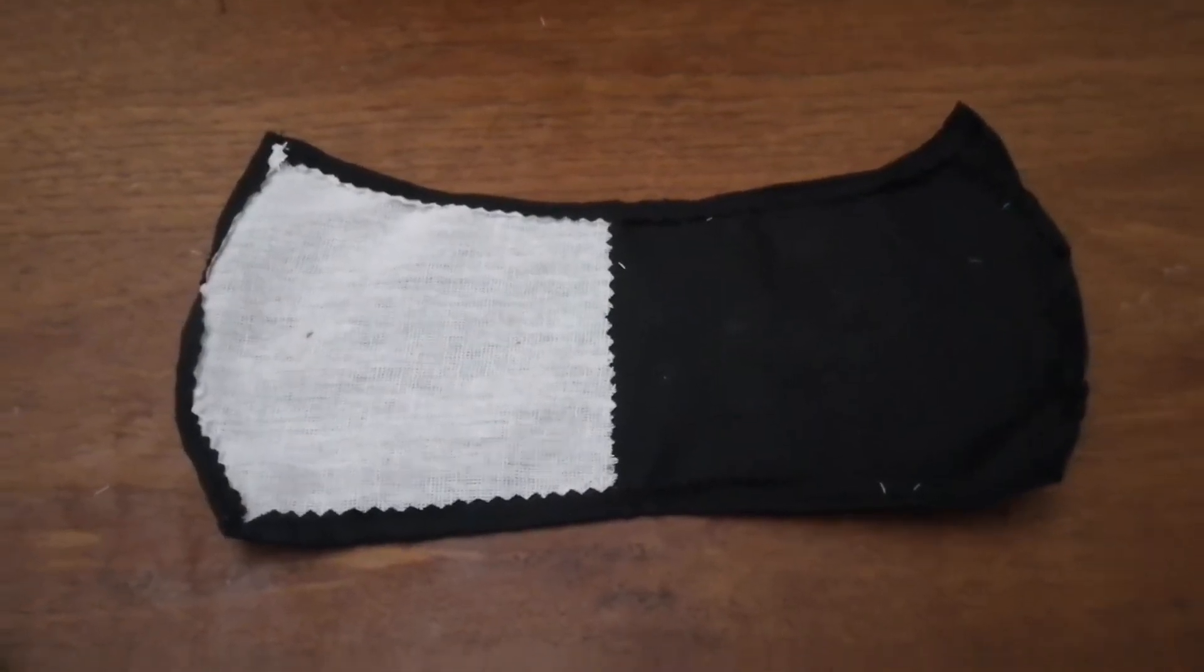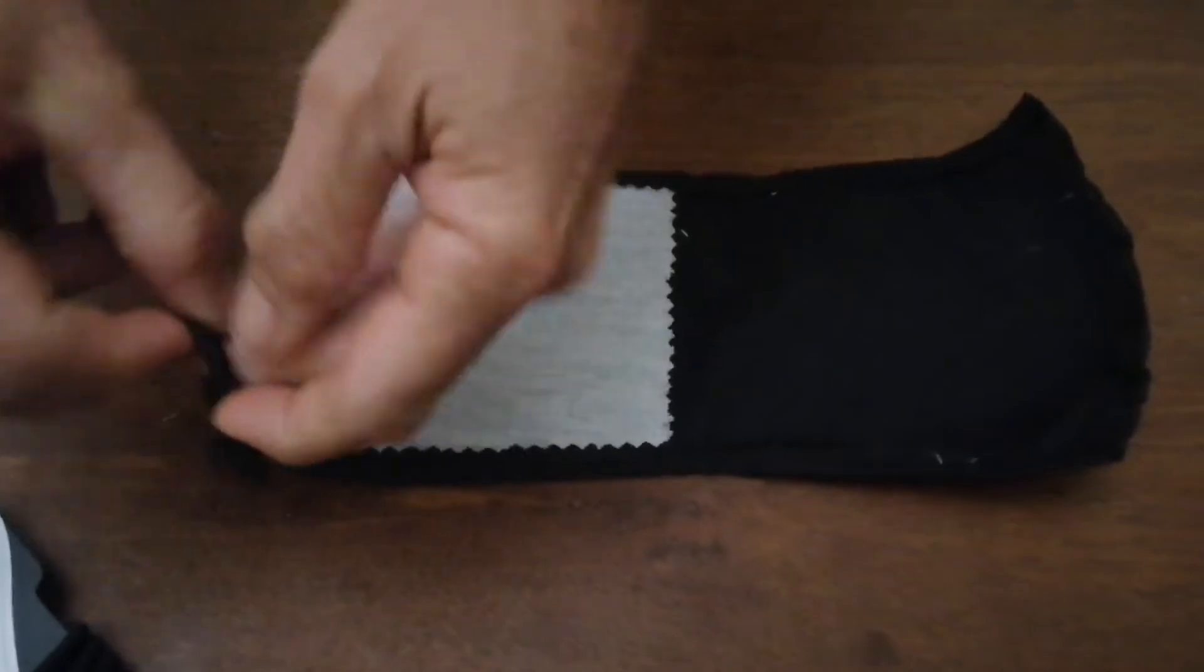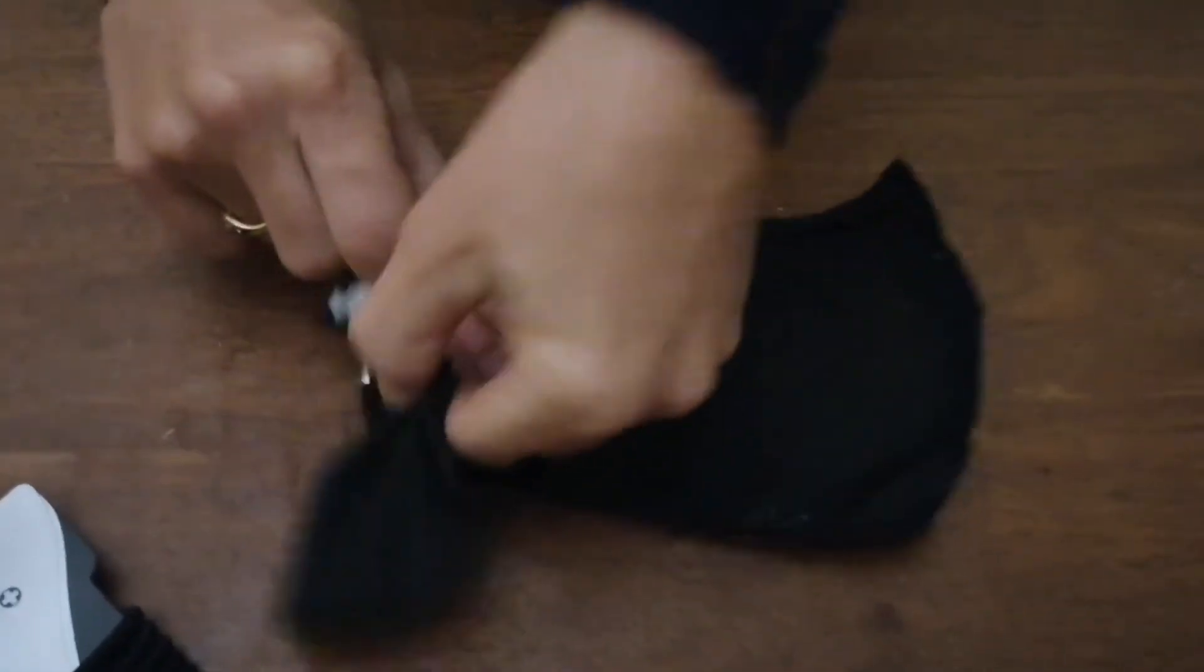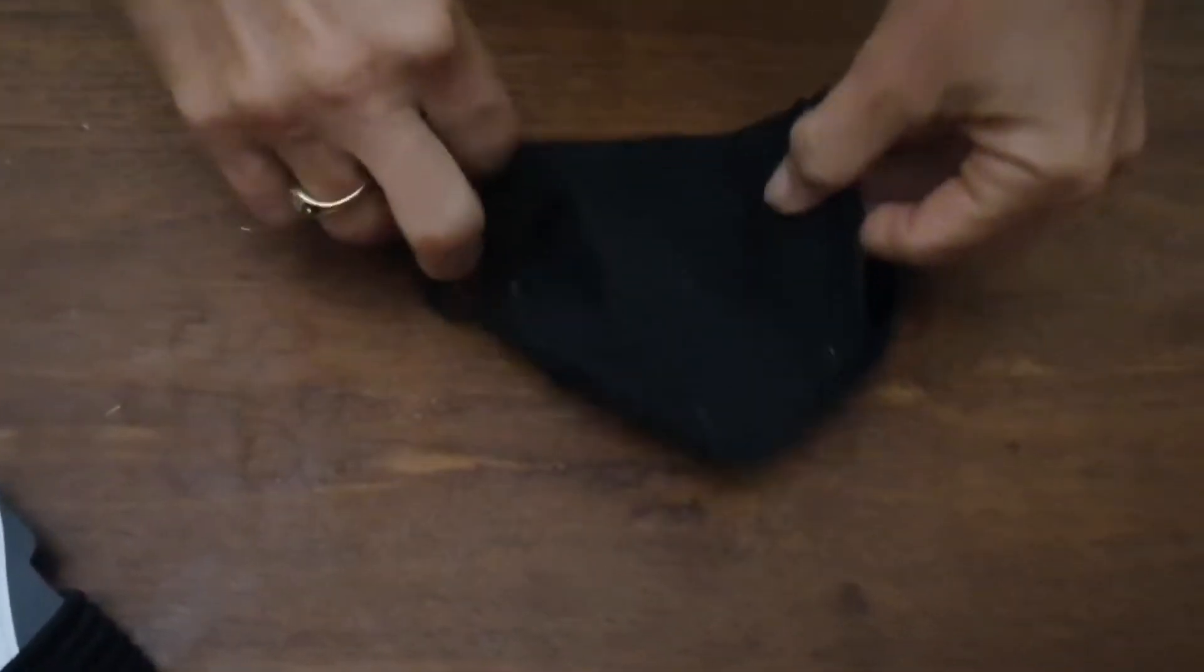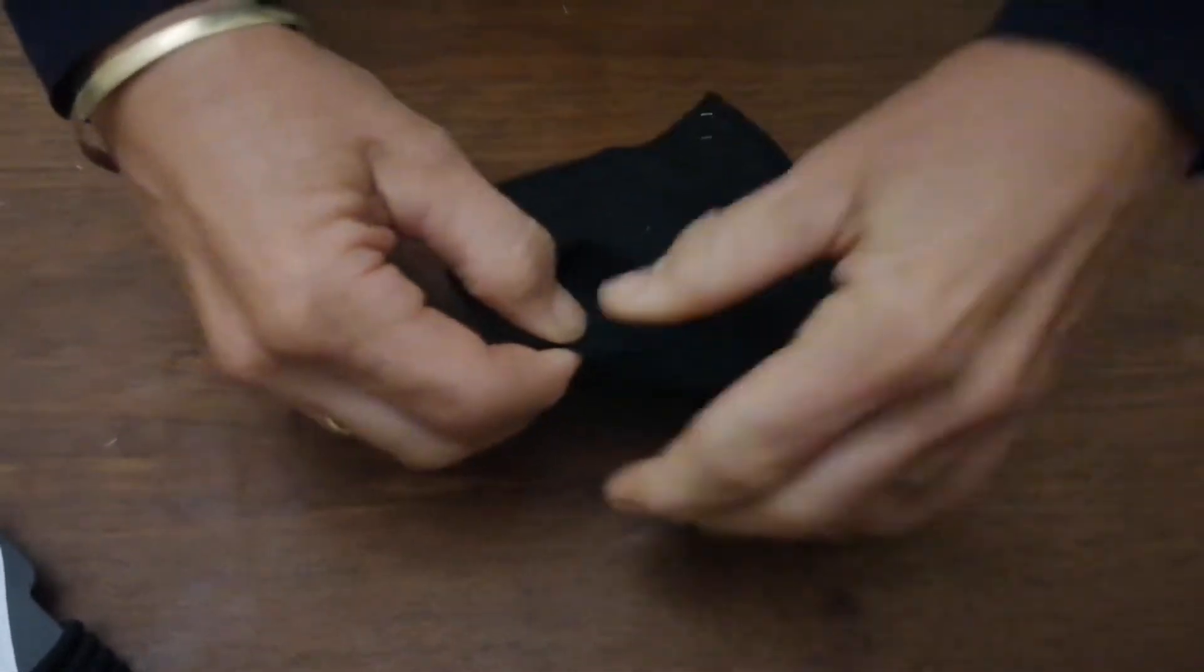So once you've sewn the edges together, you will take the elastic band and then you thread it through the material, then you halve it like so.